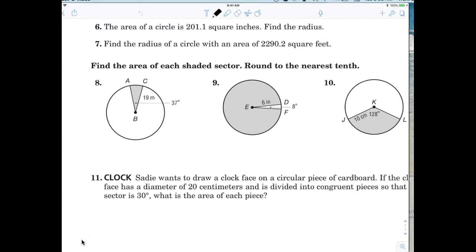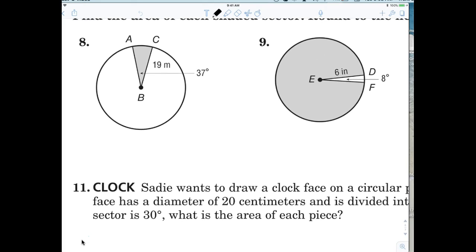So it says find the area of each shaded sector. All right, so in this case for number eight, we're just talking about that 37-degree section, correct?